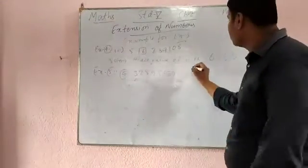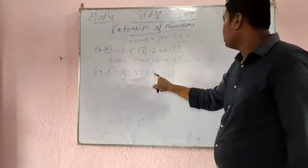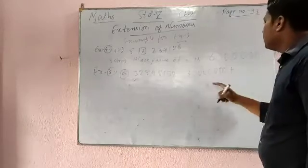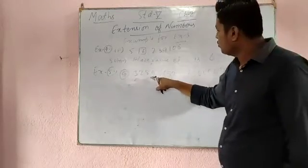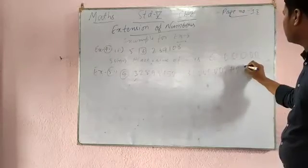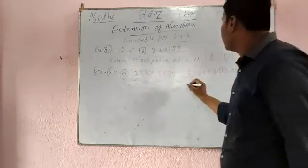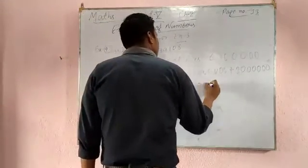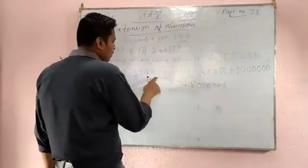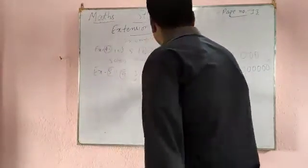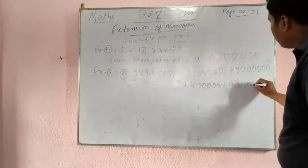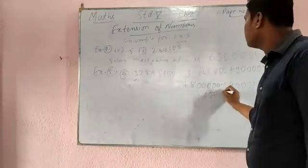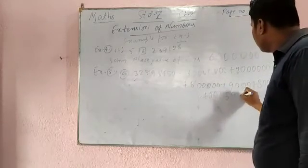For the expanded form of 3,28,98,452: for digit 3, count how many numbers come after it — 7 — so write 3 followed by 7 zeros. For digit 2, count 6 numbers after it — write 2 followed by 6 zeros. For 8, there are 5 zeros. For 9, there are 4 zeros. For 8, there are 3 zeros. For 4, there are 2 zeros. For 5, there is 1 zero. And 2 remains as is.